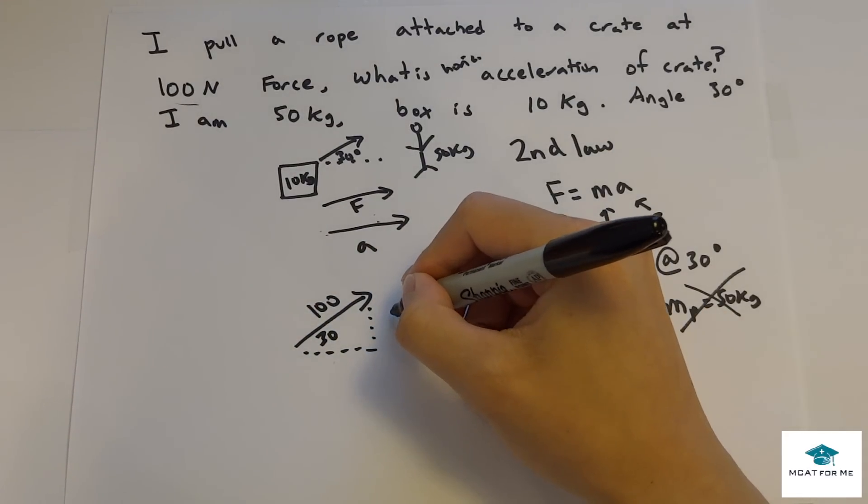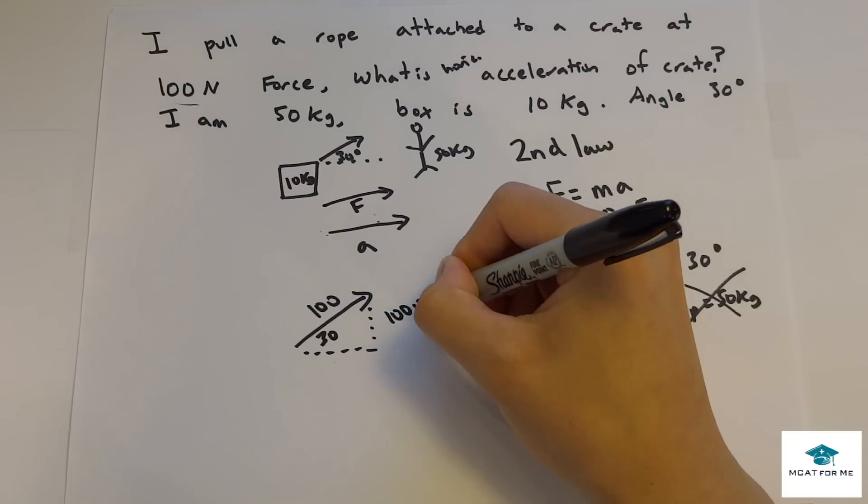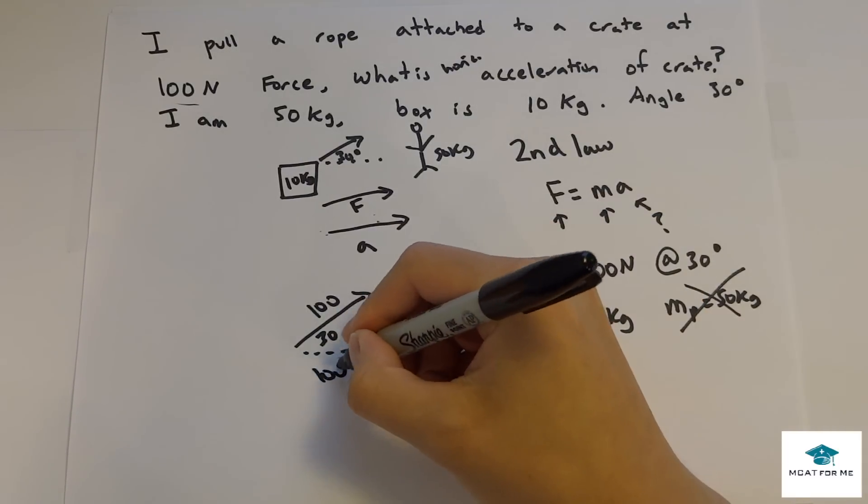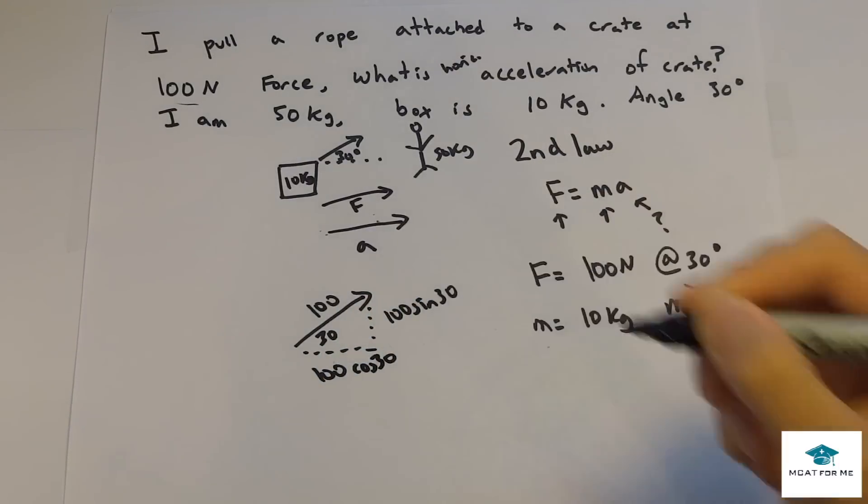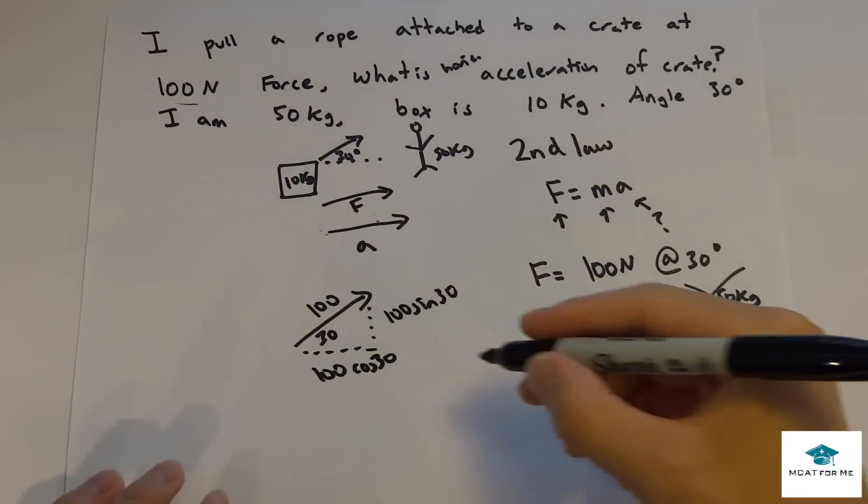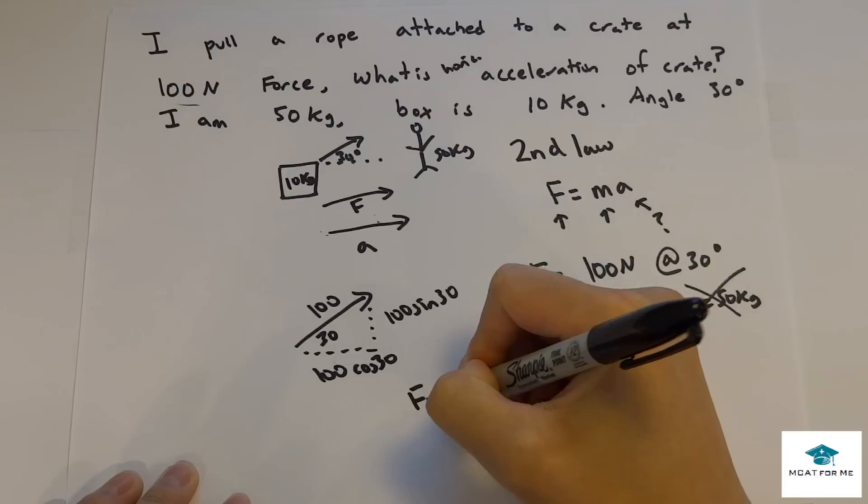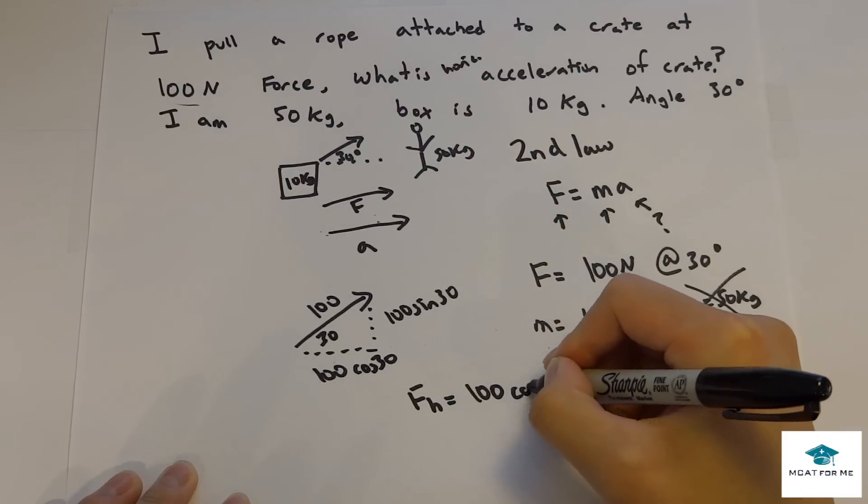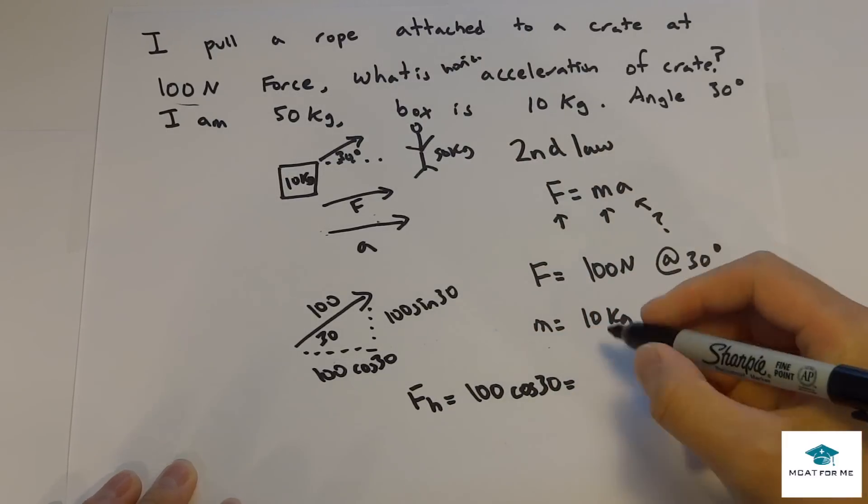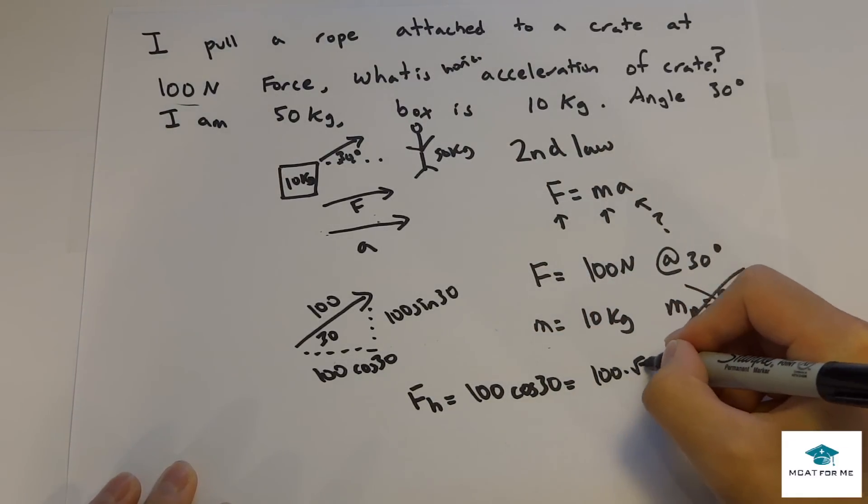This would be the hypotenuse times sine of 30, and this is 100 cosine 30. And so this would be the force in the horizontal, equals 100 cosine 30, which is 100 times square root 3 over 2.